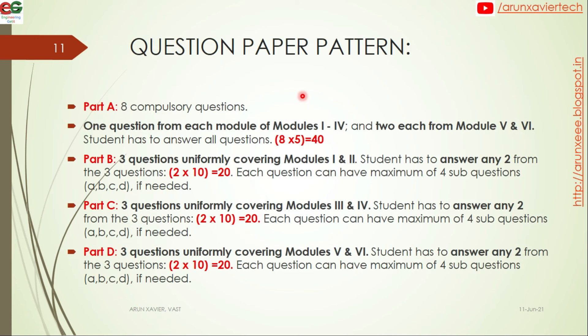The university exam paper pattern includes Part A with 8 compulsory questions worth 40 marks, and Parts B, C, and D. The maximum total mark is 100, with a 3-hour exam duration. Part A has questions worth a total of 40 marks. In Part B and C, 3 questions are asked from Modules 1-2 and Modules 3-4 respectively, and you answer any two for 20 marks each. Parts B, C, and D are each worth 20 marks, totalling 60 marks, bringing the full paper to 100 marks.